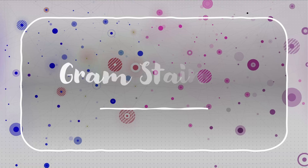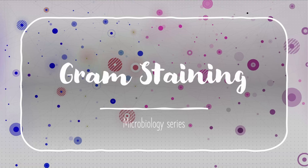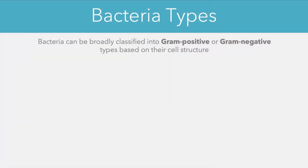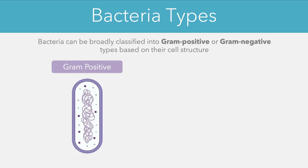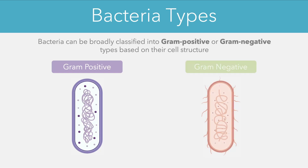Today we're going to be taking a look at gram staining as part of the microbiology series. To start this topic we first have to understand that bacteria can broadly be categorized into two main groups: the first group is referred to as gram positive and the second type is referred to as gram negative.